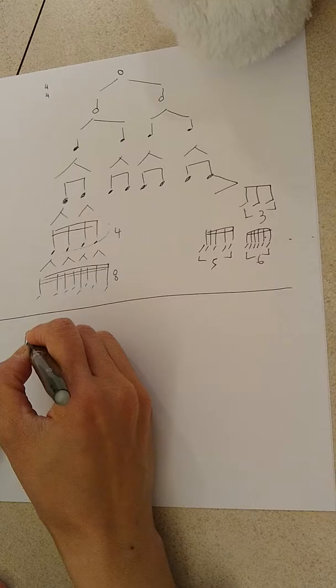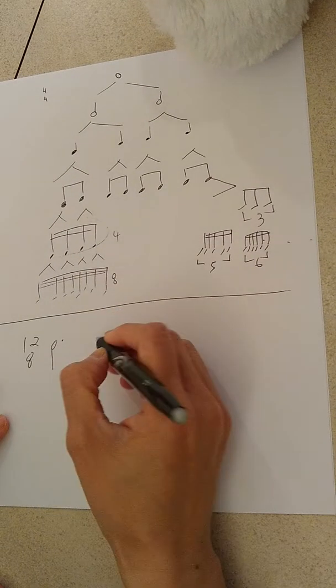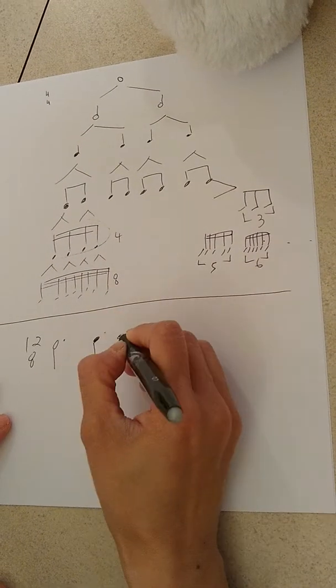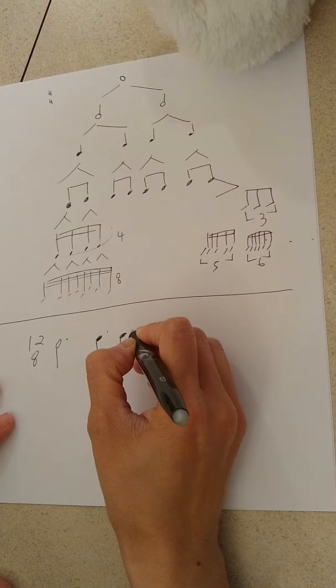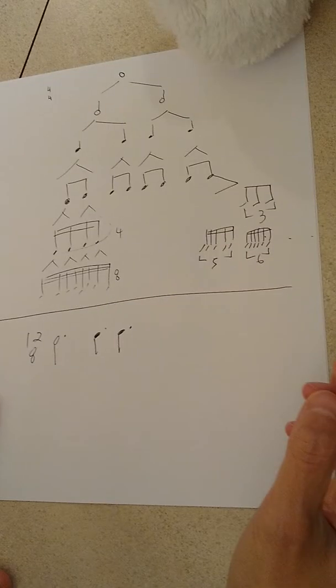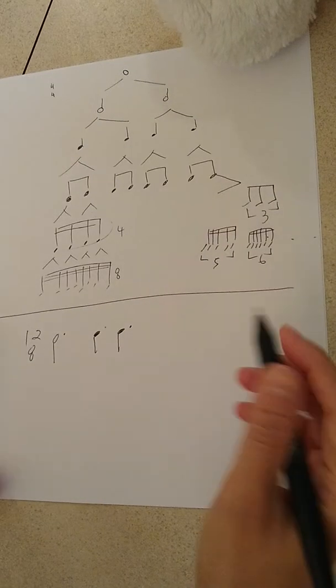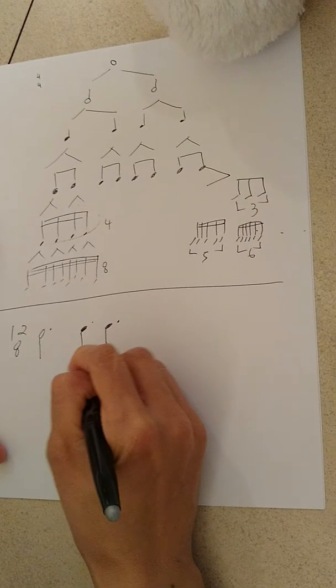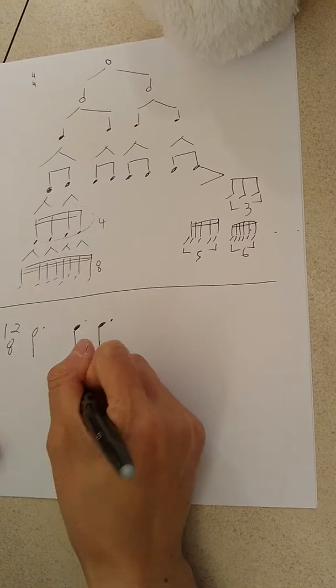If you're using a compound meter, like twelve eight, there's such thing called duplets. What are those? Okay. So, usually you're supposed to have three, right? Under normal circumstances.